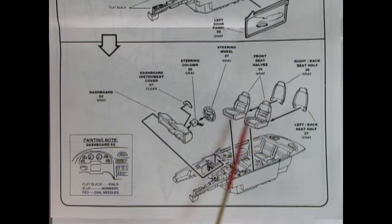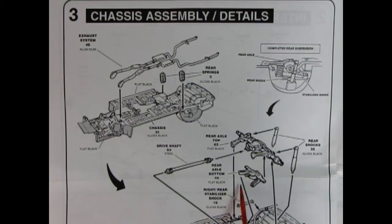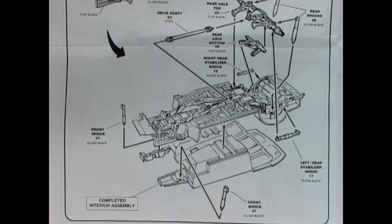Panel three shows our chassis assembly details and you can see this is a big sheet of paper. So we've got our exhaust system going in place and our rear springs, and then we've got our rear differential here. There's also an axle bottom so those glue together, then we got our shock absorbers going in here and right rear stabilizer and a left stabilizer as well, and there's our drive shaft going in, hooking on the back of the transmission and then into the front of the differential. Here we have the bottom part of that illustration showing the front shock absorbers going in place and getting ready for the next assembly step.